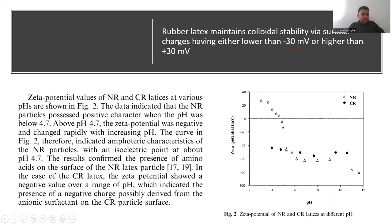A research paper presents zeta potential values for natural rubber (NR) and chloroprene rubber lattices at various pH levels. NR particles show positive character below pH 4.7 — that is, a positive zeta potential below pH 4.7. However, even when positive, the zeta potential is below +30 mV, meaning the system is not stable. Beyond pH 4.7, the zeta potential of NR becomes negative and changes rapidly with increasing pH.